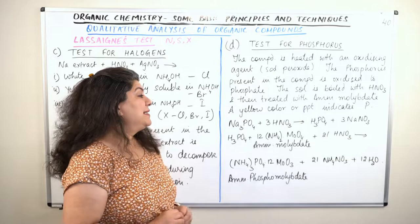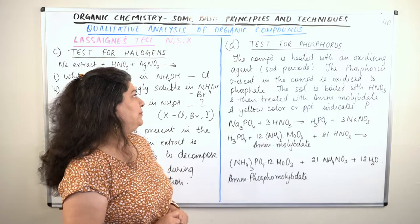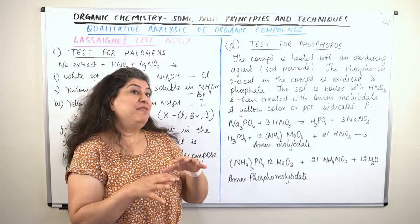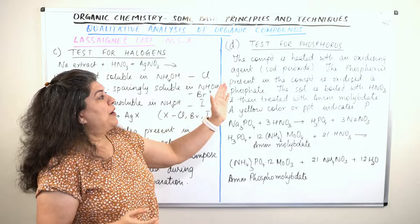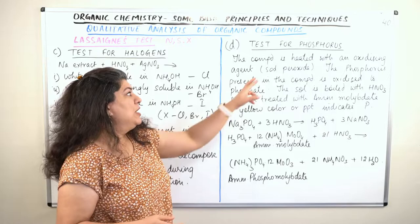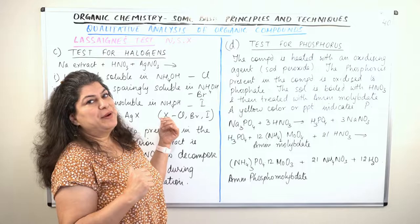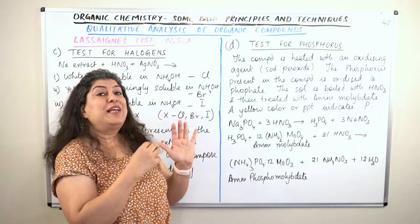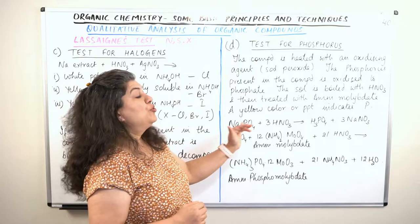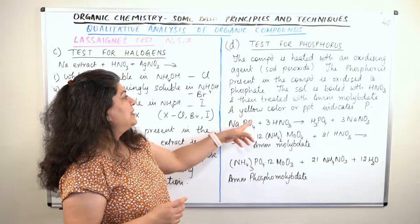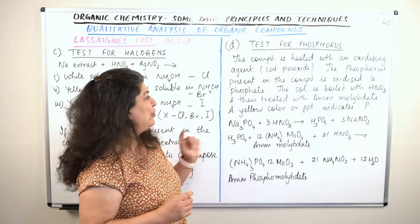We now come to the last element we test for, and that is phosphorus. This test is not done with the help of the Lassaigne extract. The compound is first heated with an oxidizing agent — we usually use sodium peroxide — which provides oxygen. When sodium peroxide is used, the phosphorus of the compound combines with it, resulting in the formation of sodium phosphate.